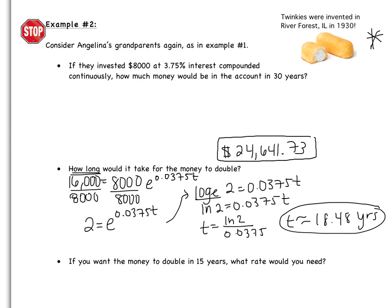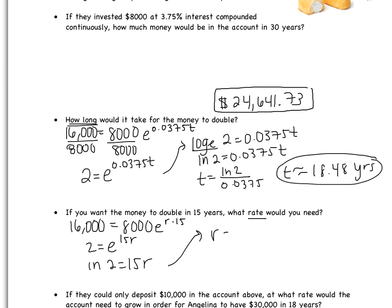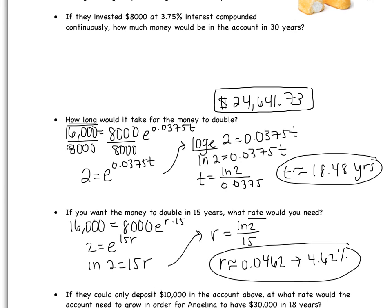So it would take about 18 and a half years for the money to double. If you want the money to double in 15 years, what rate would you need? Starting at $8,000 doubling to $16,000 in 15 years: divide by 8,000 to get 2 equals E to the 15R, then take the natural log: natural log of 2 equals 15R, so R equals natural log of 2 divided by 15, giving approximately 0.0462, which is 4.62%.